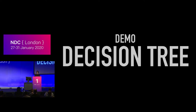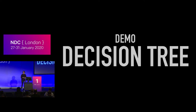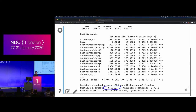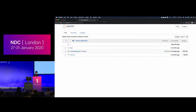Let's look at another example: a decision tree. This algorithm underlies most of the widely-used methods like random forests, and it's traditionally used as a cornerstone of interpretability in machine learning. Let me show you another demo.